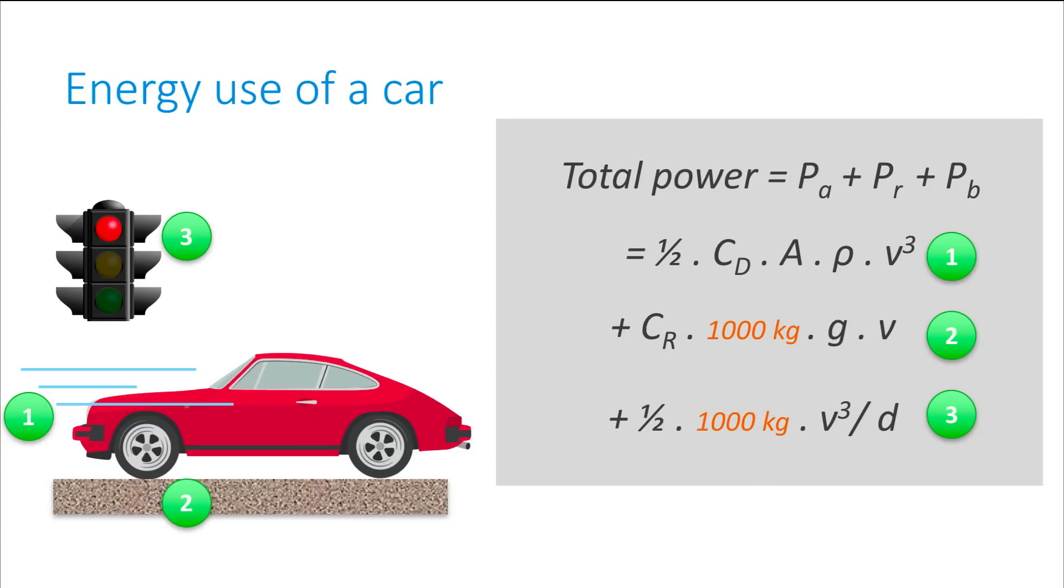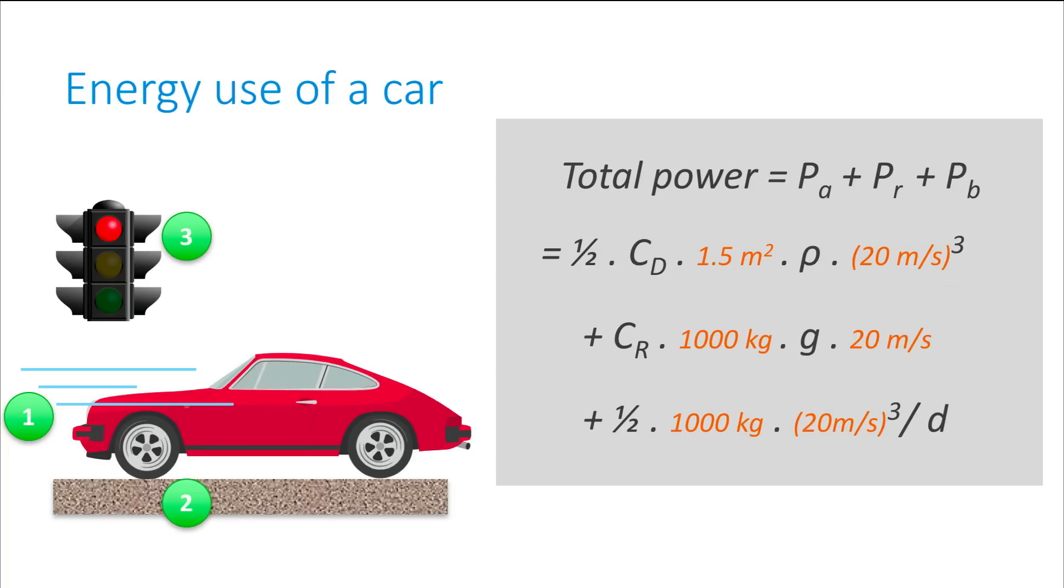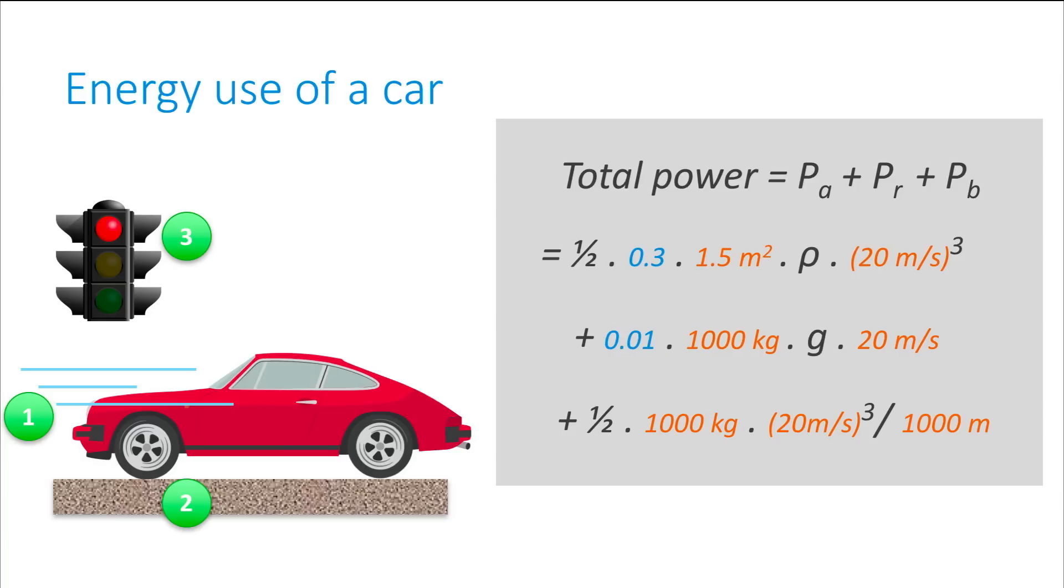Let the mass m of the car be something like 1000 kg. The effective front area A of the car is 1.5 square meters. Let the speed at which the car is travelling be 20 meters per second. Note that 20 meters per second equals 72 km per hour. The distance d which the car travels before coming to a halt at a traffic light is let's say 1000 meters. Typical values for the drag coefficient Cd and the coefficient of rolling resistance Cr are 0.3 and 0.01 respectively. The air resistance and the gravitational acceleration have standard values of 1.3 kg per cubic meter and 9.8 meters per second squared.